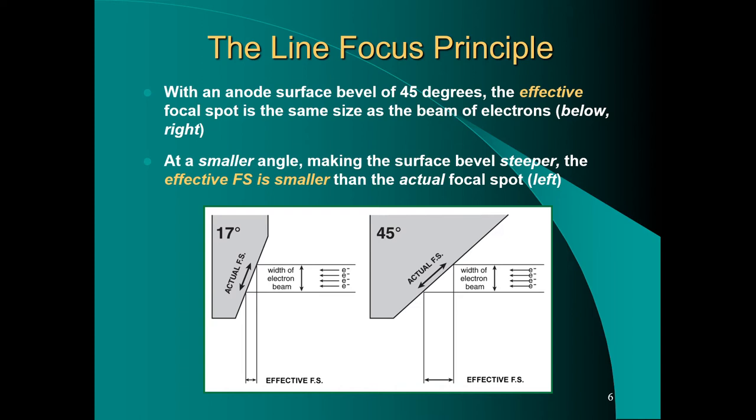We have the actual focal spot which is the area on the anode that is struck by the stream of electrons. The more anode bevel angle there is, the wider the actual focal spot will be. A wider actual focal spot means a wider effective focal spot. There's a relationship here between actual focal spot size and effective focal spot.